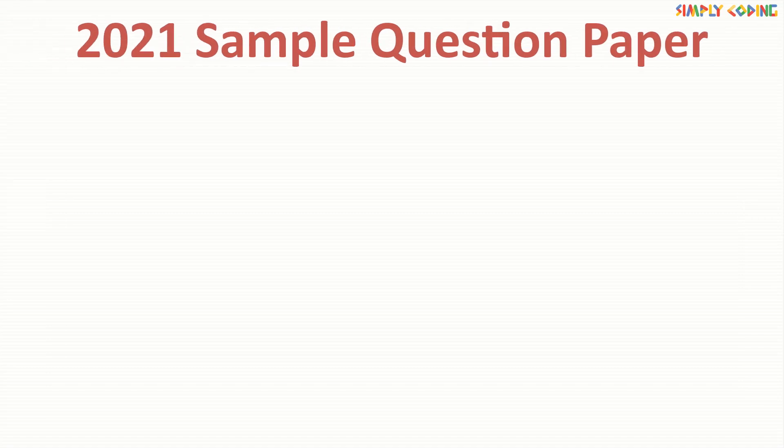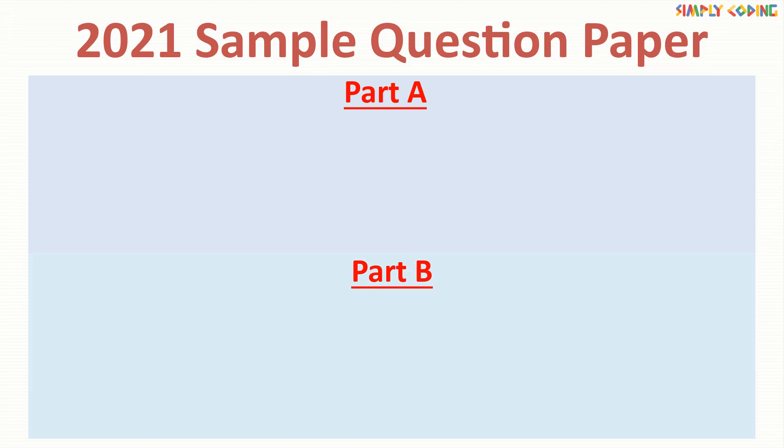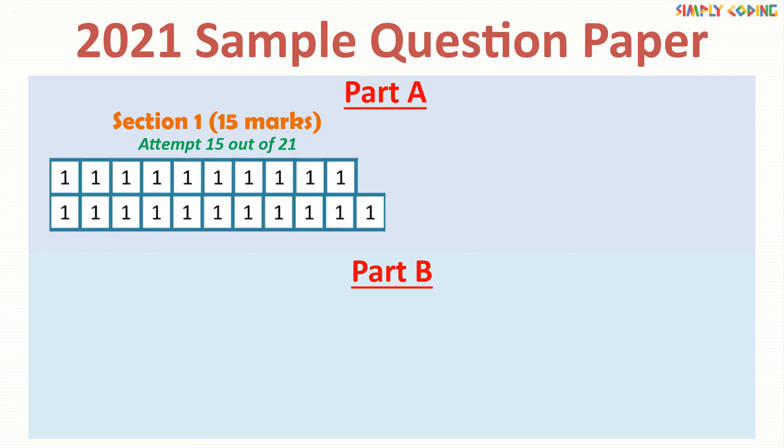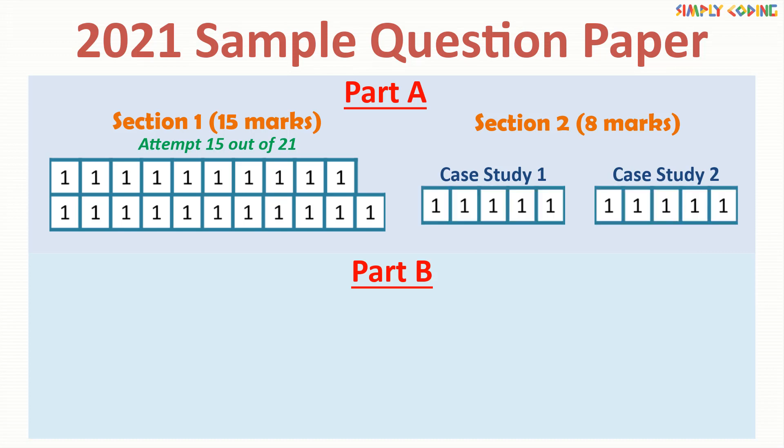Next, let's see how marks are distributed in the sample question paper. The sample paper is divided into two parts, part A and part B. Part A has two sections. Section 1 is of 15 marks and has 21 short questions of 1 mark each out of which you have to attempt 15 questions. Section 2 is of 8 marks and has 2 case studies. Each has 5 questions of 1 mark each and you have to attempt any 4.